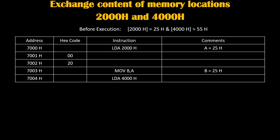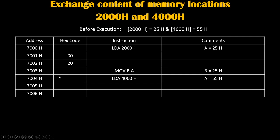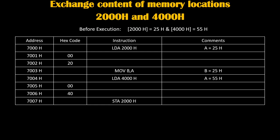That's why we will write one more instruction: LDA 4000h, to load the accumulator with the value at 4000h. Since 4000h is holding 55h, that will get loaded inside the accumulator, so the accumulator will become 55h. Again, LDA 4000h is a 3-byte instruction, so it will take 3 memory locations: 7004, 7005, and 7006. On 7004 we will write the hex code for LDA, and 4000h we will write in reverse order as 00 and 40.